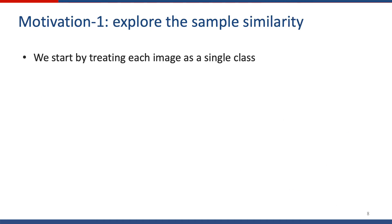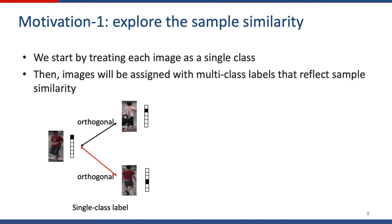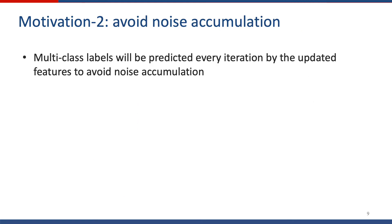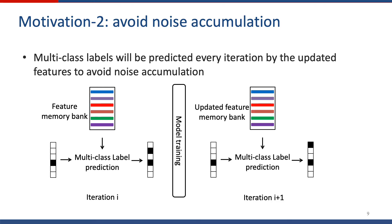We start by treating each image as a single class. Different from instance recognition, we assign multi-class labels to each image that reflect sample similarity, not single-class labels. On the other hand, different from clustering-based methods, we predict multi-class labels every iteration using the updated feature, to avoid noise accumulation.